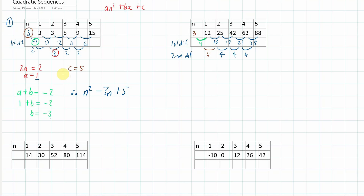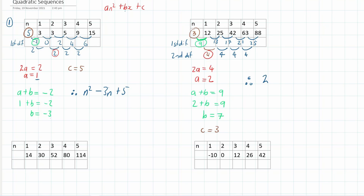Now we're ready to go. We know that 2a is equal to 4 in this case, so a is equal to 2. Then a plus b is equal to the first first difference: 2 plus b equals 9, so b must equal 7. And finally, this zero term is equal to c, which is 3. Therefore, we can write the quadratic series as 2n squared plus 7n plus 3.